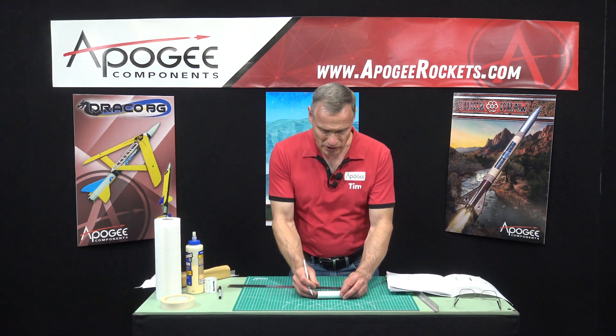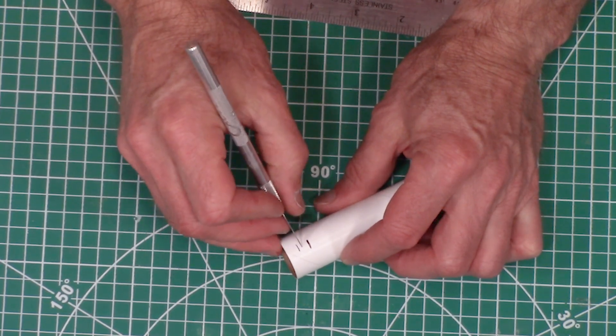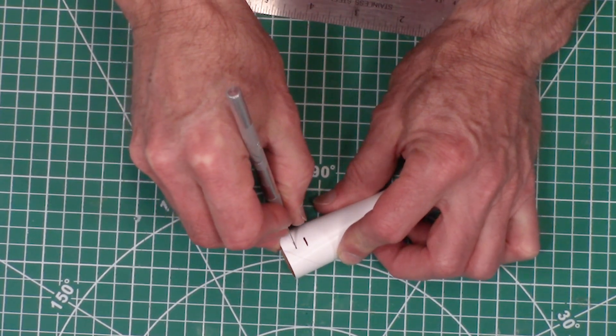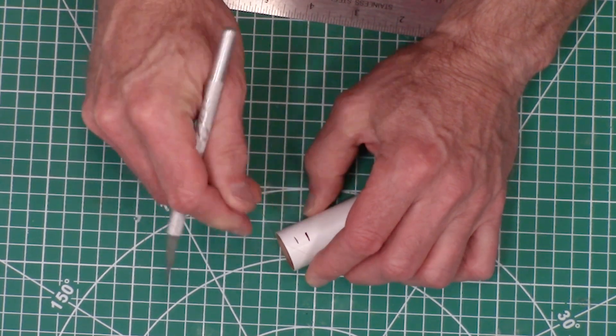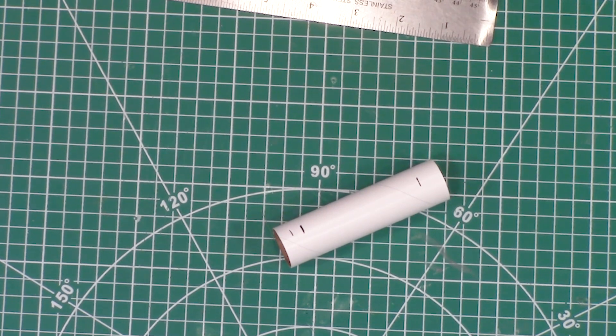Next we're going to cut at the quarter inch line. We're going to cut a slot for the engine hook. The slot doesn't need to be very long, just big enough for the engine hook.